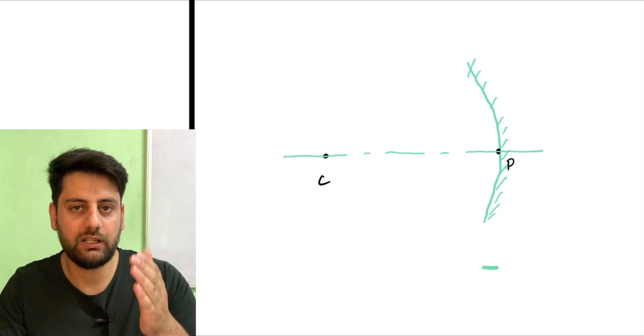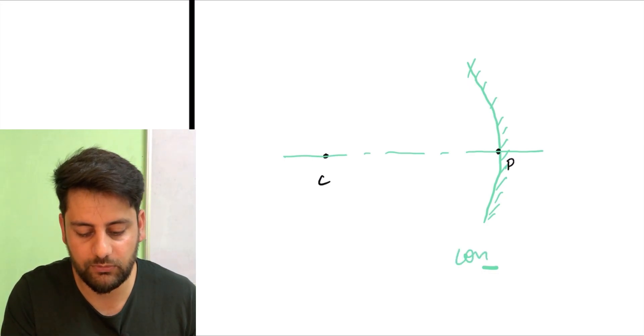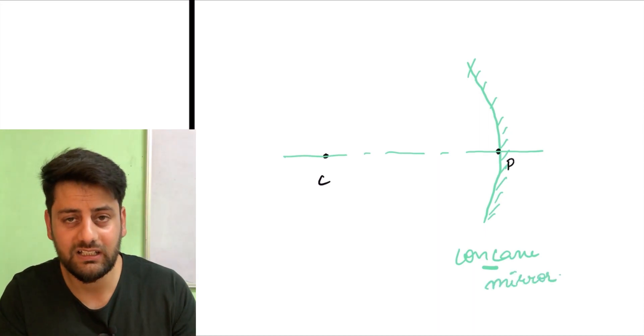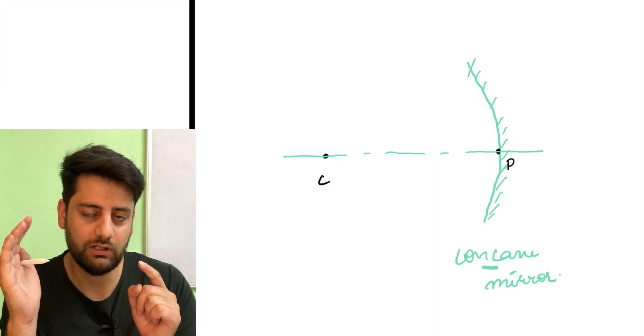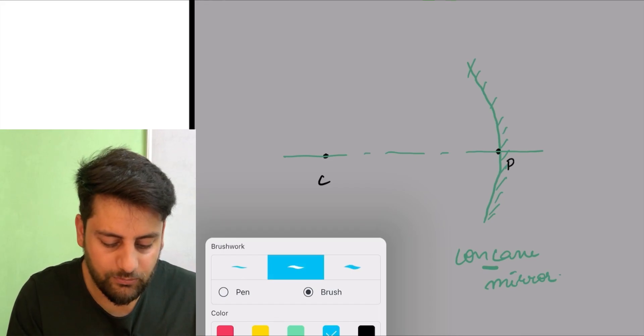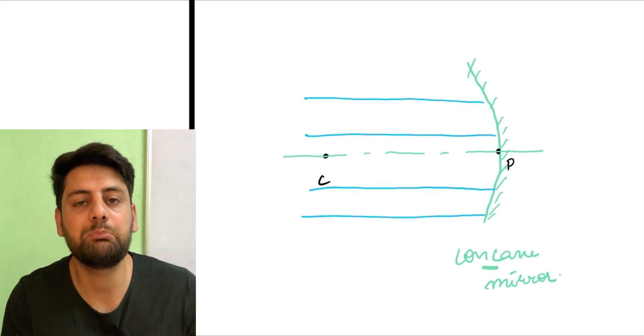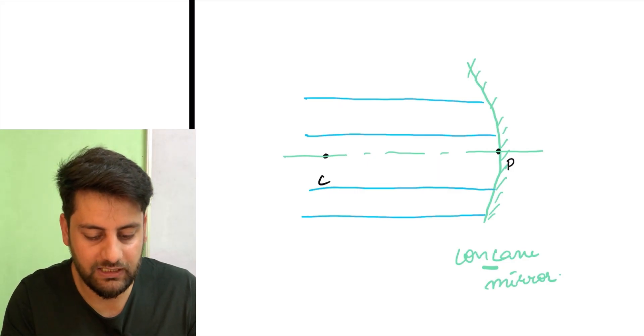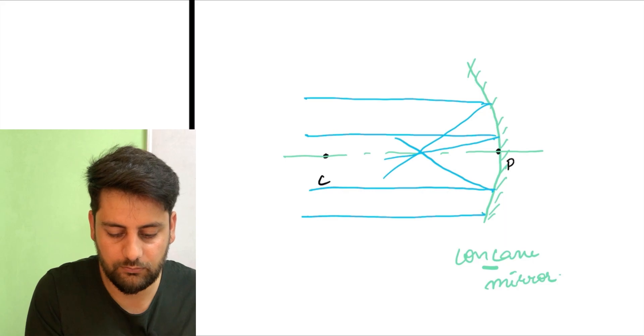Main is curvature pe, is mirror pe, main parallel beam of light dal raha hon. Obviously this mirror is concave mirror. I hope you do not have any problem in that or confusion. Such a mirror is known as concave mirror. So if I make a parallel beam of light incident on this mirror, let's see, ye ek parallel beam of light main incident karva ta hon. Jahan pe ye light aake meet karegi.